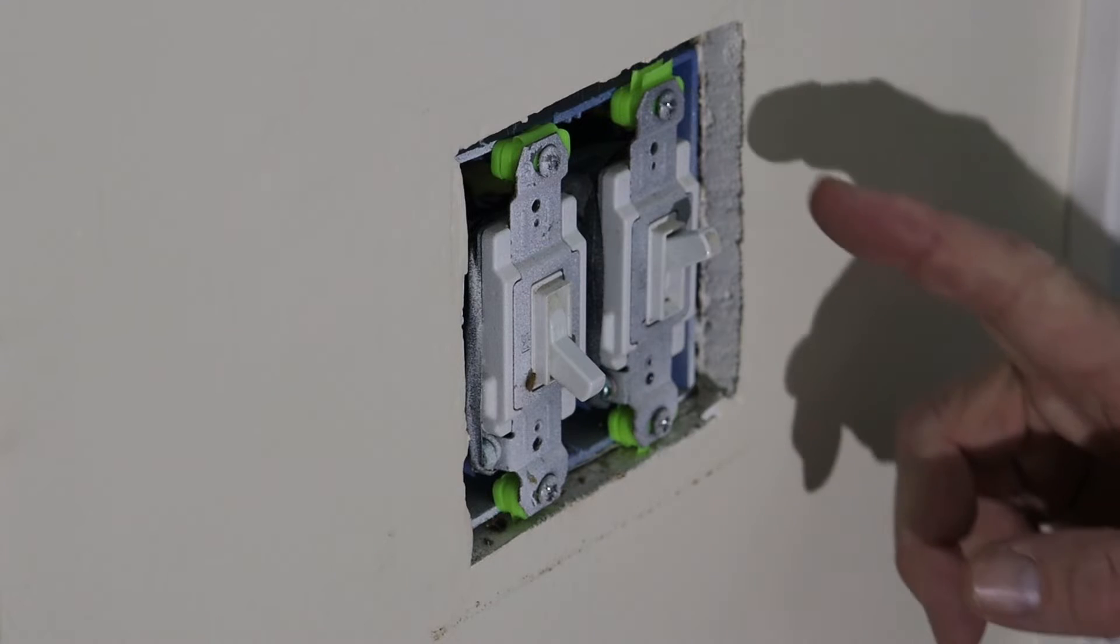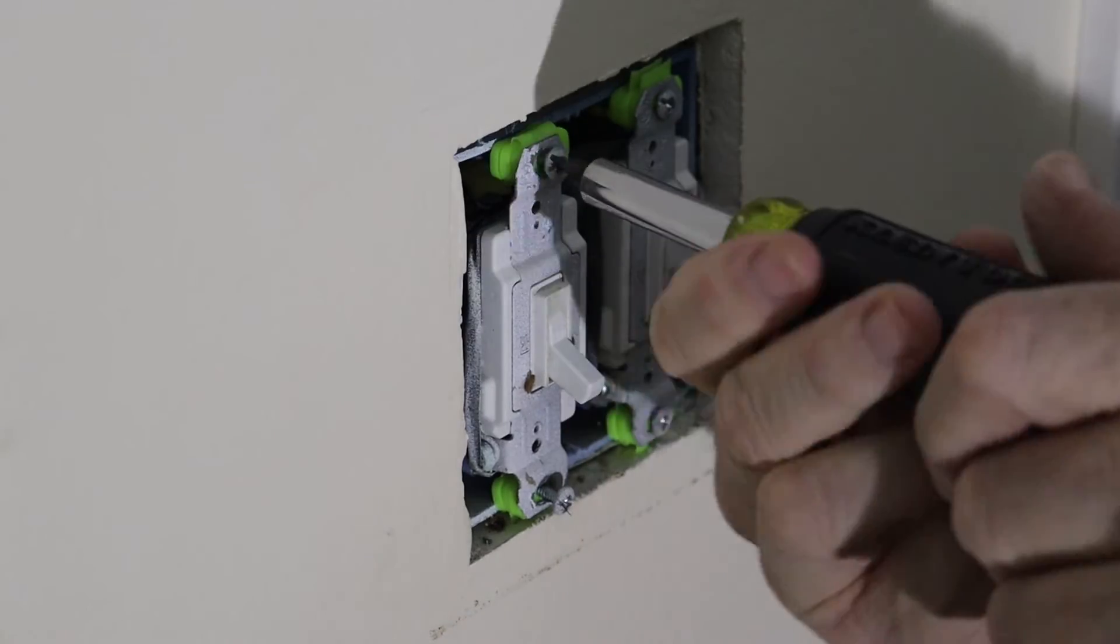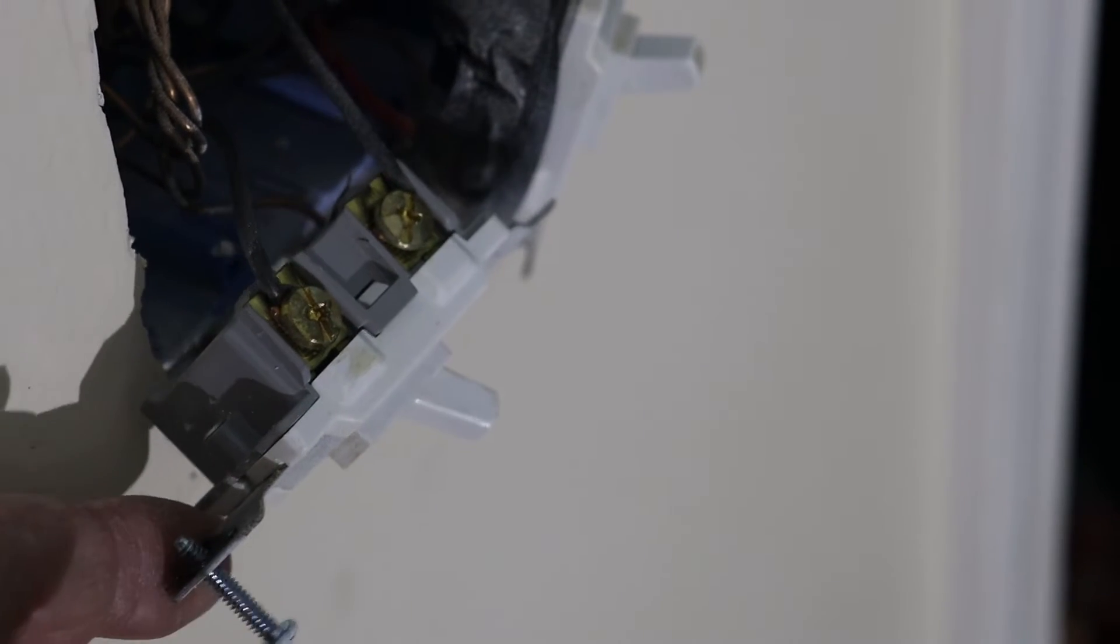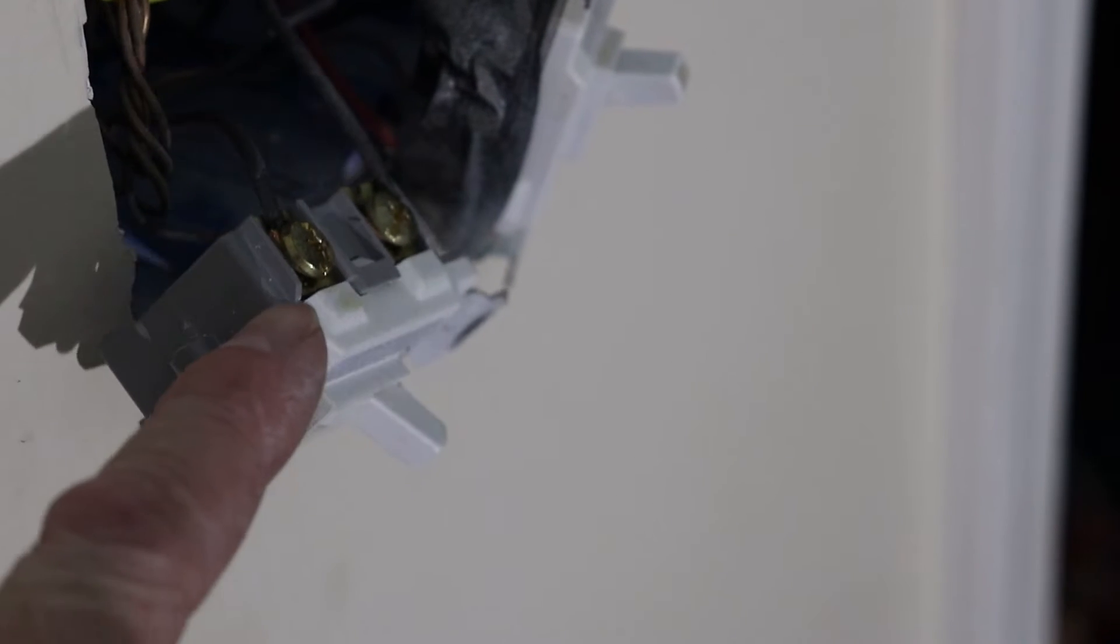This one is a single pole switch, and this is the switch for the stairs. It's a three-way switch. I'm going to go ahead and start with the single pole switch first. It'll be the easiest to replace. So as I said, this is a single pole switch. It only has the two screws on the side, and it'll have the one grounding screw. So I'll go ahead and get that hooked up.